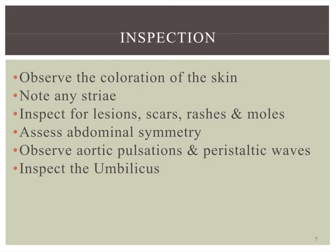We're looking for lesions, scars, rashes, and moles. Scars alert us to any type of surgical scars, because they could indicate underlying adhesions or excessive fibrous tissue. Look at abdominal symmetry — easiest if you get level with them from the side — and look for any masses, tumors, hernias. You can also look for aortic pulsations right at the umbilical area. Occasionally you can see peristaltic waves, though typically not visible — I've only seen it a few times in very thin people having diarrhea.